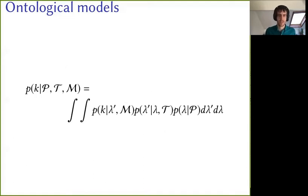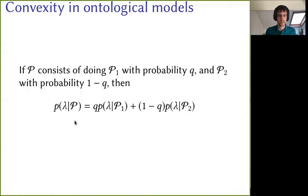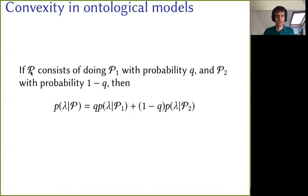So far, you can represent any probabilities using this. Now we're going to add in this principle of non-contextuality. But first, just a simple observation about convexity: if some procedure, say a preparation procedure P, consists of doing a procedure P1 with probability Q and some other procedure P2 with probability 1 minus Q, then that has to be represented in your ontological model by the corresponding mixture of probabilities. Because with probability Q we did P1 and therefore got some lambda from P1, and with probability 1 minus Q we did P2 and therefore got a lambda from there — so the overall probability for a given lambda just has to be that mixture.